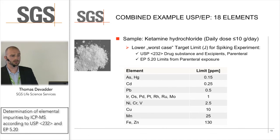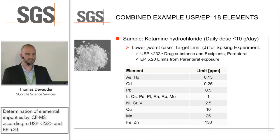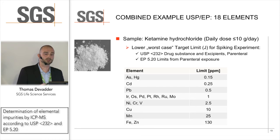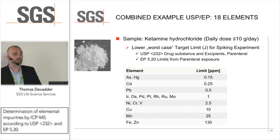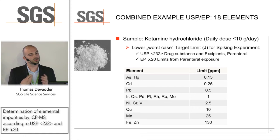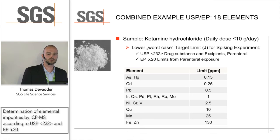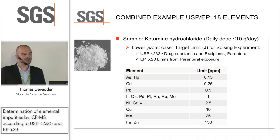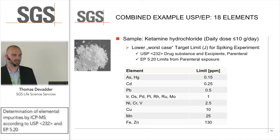I've chosen a pretty tricky sample material for our experiment. We consider a daily dose of not more than 10 grams per day in a parenteral dosage form, and we combine the worst-case limits from EP and USP in one experiment with a spiking experiment. We start with arsenic and mercury at a low concentration of 0.15 ppm, and the top limit will be iron and zinc at 130 ppm.